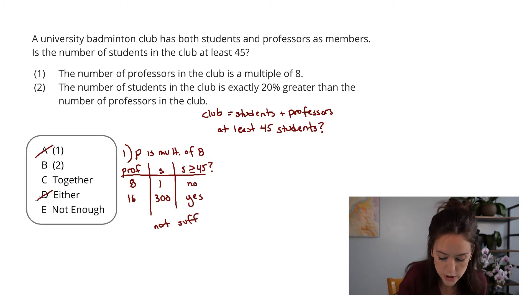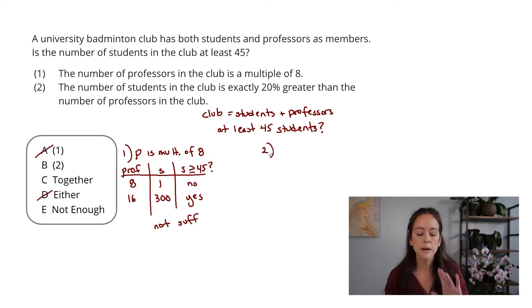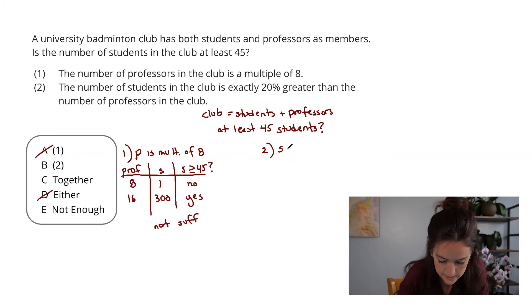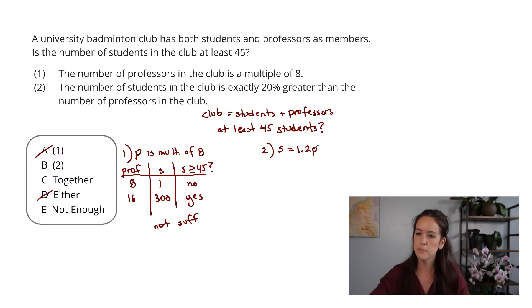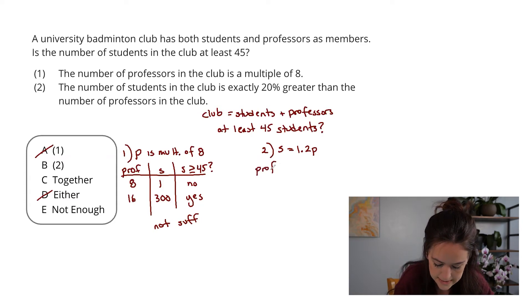Now I'm ready to jump into statement two, which tells me that the number of students is exactly 20% greater than the number of professors in the club. To write that algebraically, that looks like students being 1.2 professors. Again here, this seems insufficient because there are a lot of different options, but I am going to test some cases out. Let's say I now have 10 professors. That would mean that I have 12 students. But if I have 100 professors, I have 120 students. So I have two different answers here.